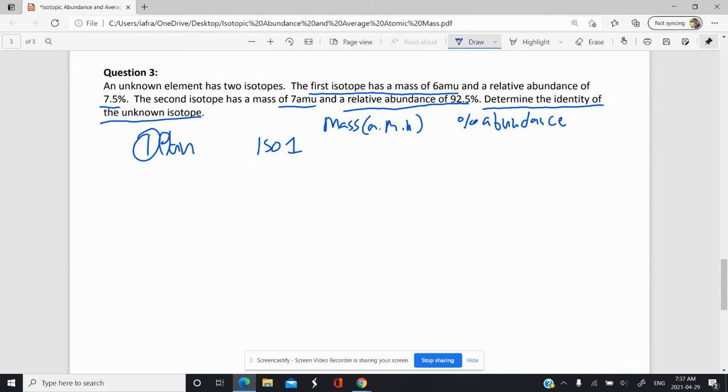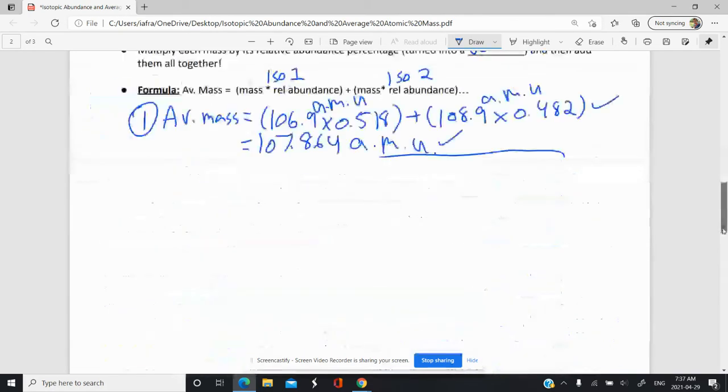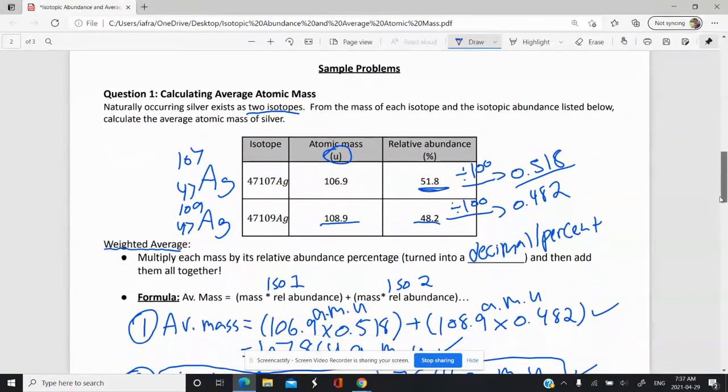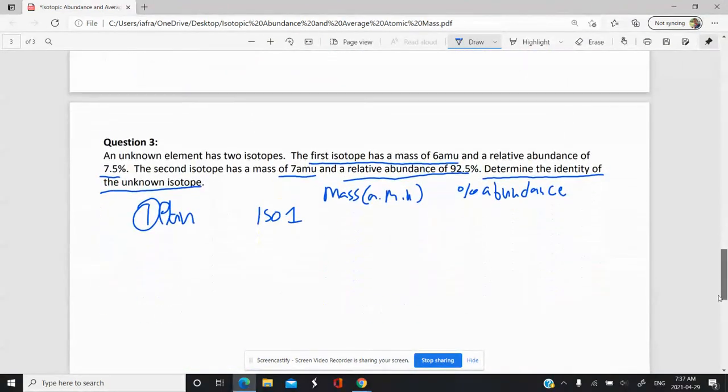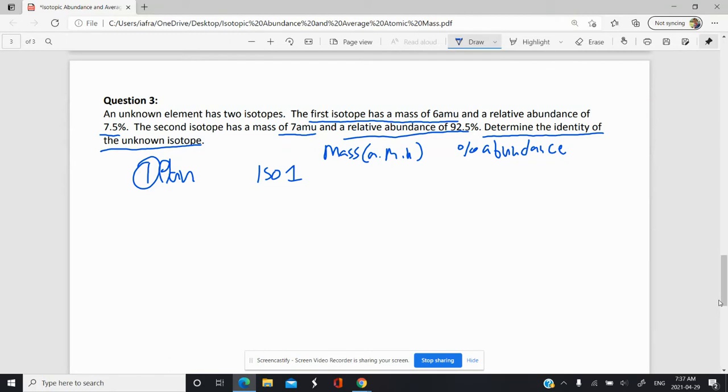And so what I'm doing is I'm creating a table similar to what we had in question 1 up here, where I have the isotope, the atomic mass, and then the relative abundance there. And I also have the same thing for isotope 2. I'm going to write that information out here.